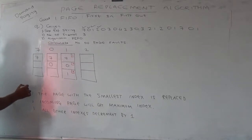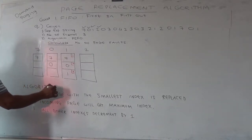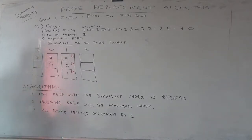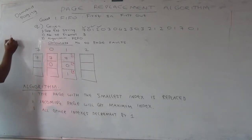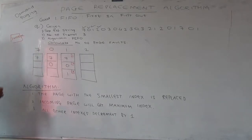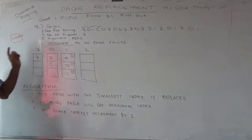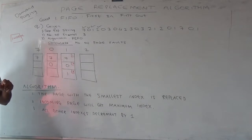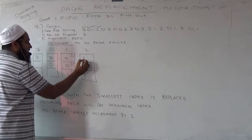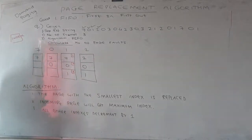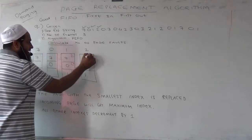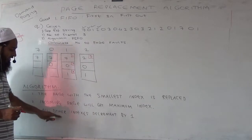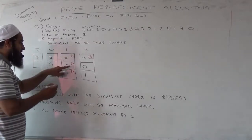See what the algorithm is — the reason I am telling you all this is if you are told to write a program for this, you should be able to write a C++ program also. The algorithm is: the page with the smallest index is replaced. So 7 will go out and 2 will take 7's place because it is a replacement. The incoming page will get the maximum index, and all the other indexes decrement by one.